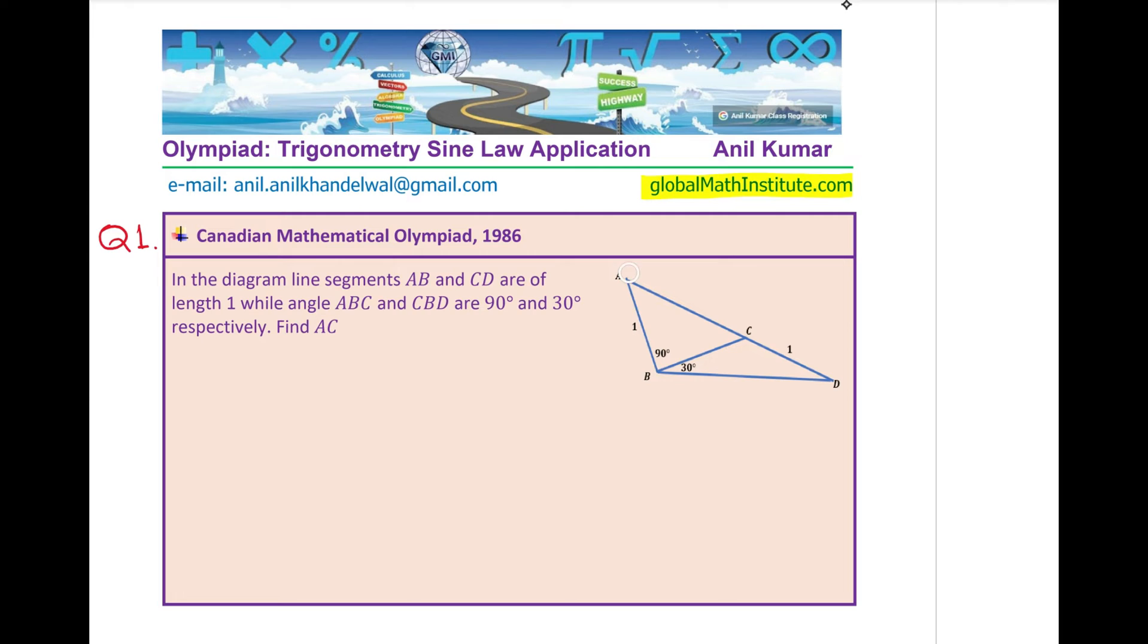The diagram is given to you, the angle of 90 degrees is at B as shown here, the angle ABC. The other angle at B, which is CBD is given to you as 30 degrees. The sides AB and CD are one unit each. So, these are equal sides.